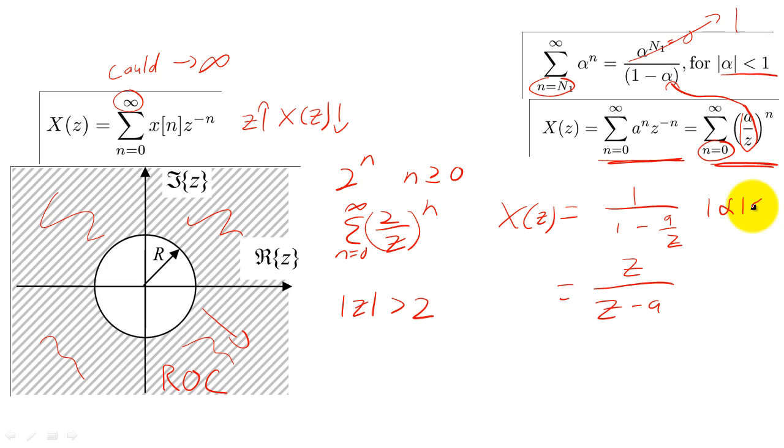If we double check our previous example with 2^n, we again find that the ROC of the Z-Transform is |Z| > 2.